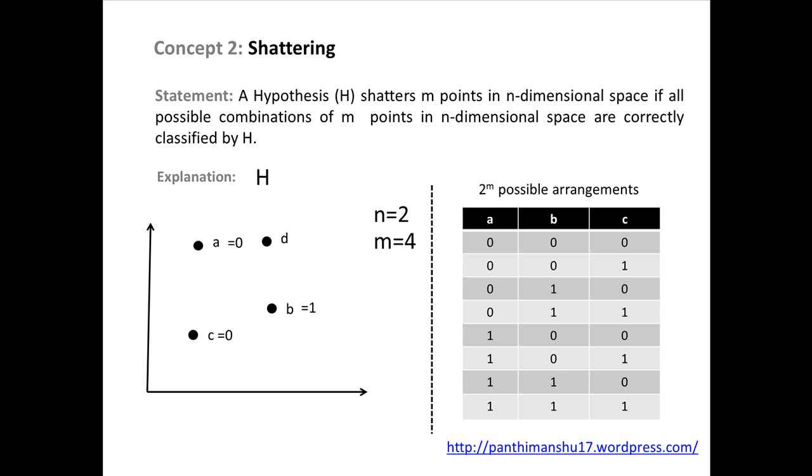Now, there can be 16 possible combinations. If a and b belong to class 0, and c and d belong to class 1, then no straight line can shatter them correctly. So, we can say that four points in two-dimensional space are not shattered by a straight line. Now, we are in a position to understand VC dimension, and it is defined as a cardinality of the largest set of points that the hypothesis can shatter.